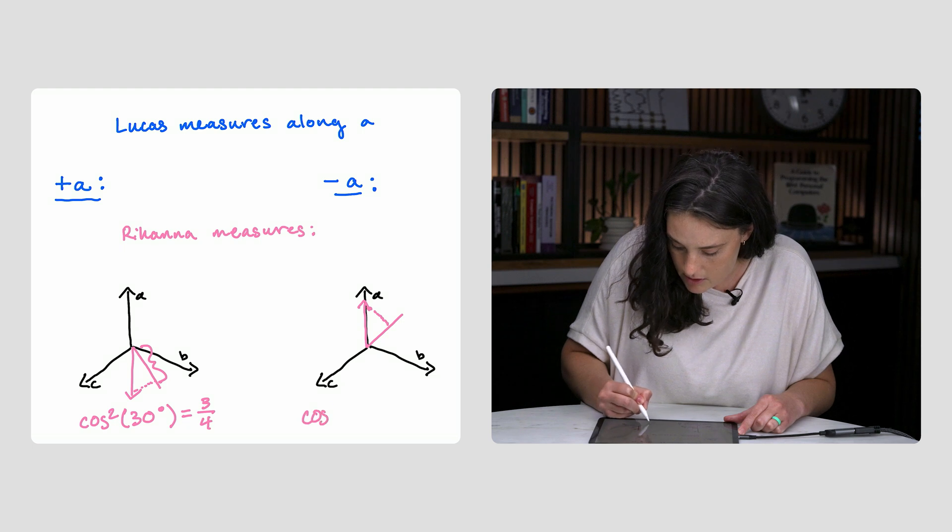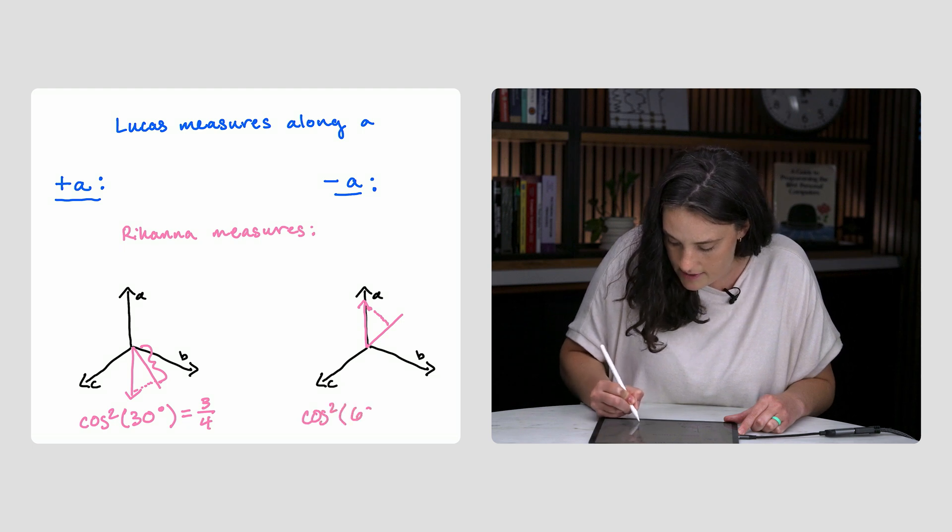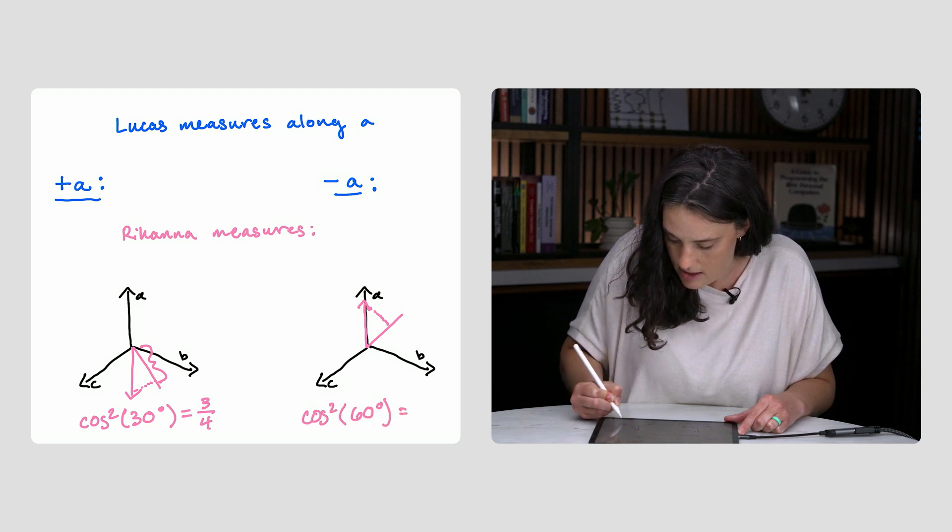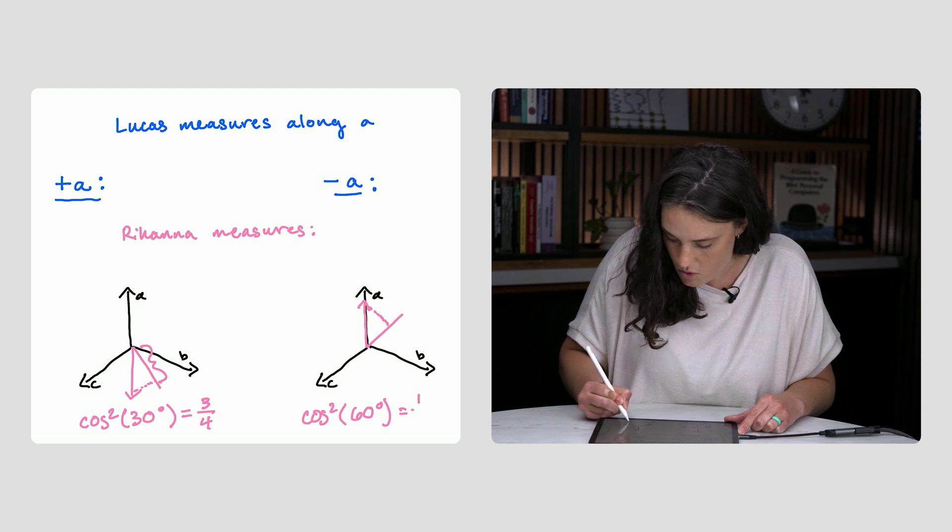So cosine squared of 60 degrees equals 1 fourth.